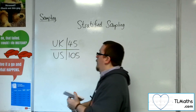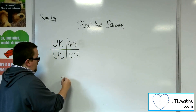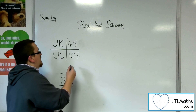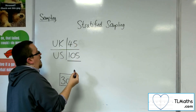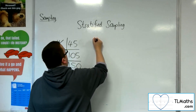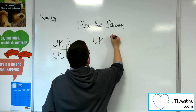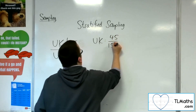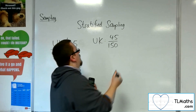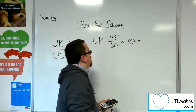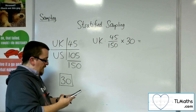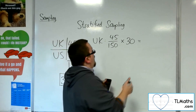Let's say I wanted 30 people in my sample — a sample of 30. Together, the total is 150 people in the room. For the UK, I would want 45 out of 150, and I want that proportion of the 30. So 45 divided by 150, times by 30, gets me 9.